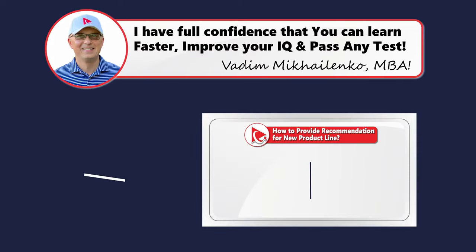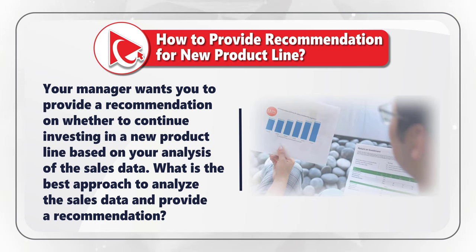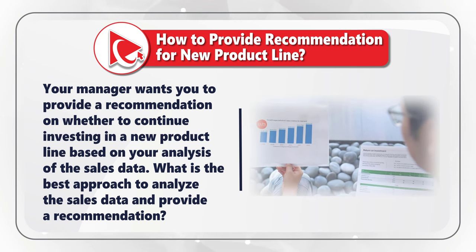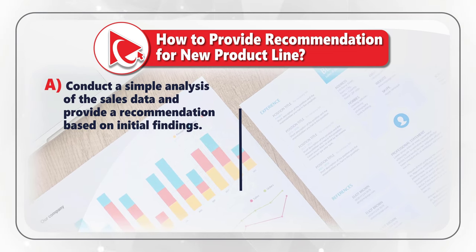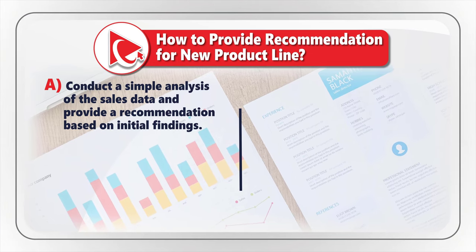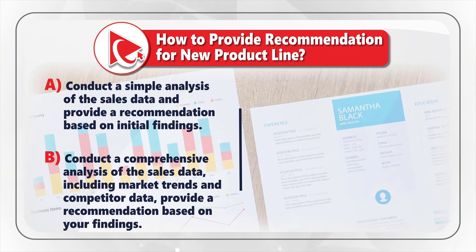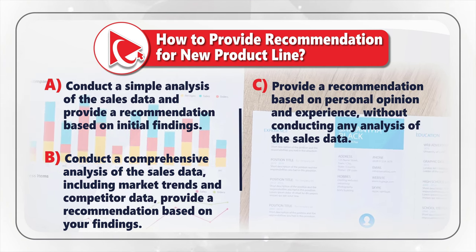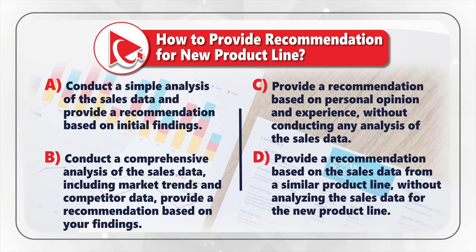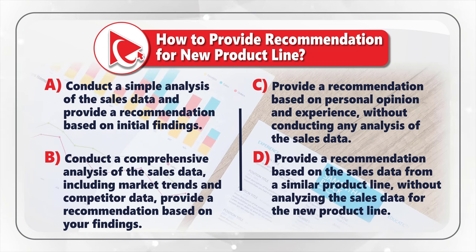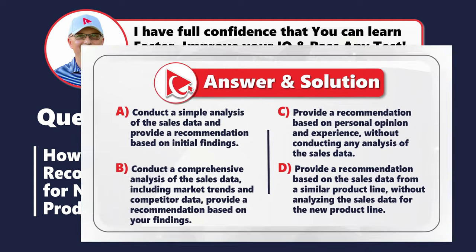Your manager wants you to provide a recommendation on whether to continue investing in a new product line based on your analysis of the sales data. What is the best approach? Choice A: Conduct a simple analysis and provide a recommendation based on initial findings. Choice B: Conduct a comprehensive analysis including market trends and competitor data, then provide a recommendation. Choice C: Provide a recommendation based on personal opinion without any analysis. Choice D: Provide a recommendation based on sales data from a similar product line without analyzing the new product line's data.